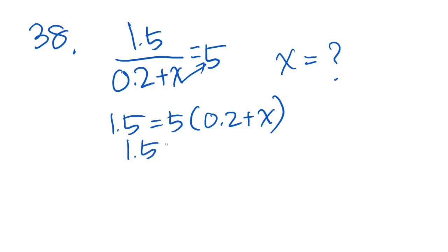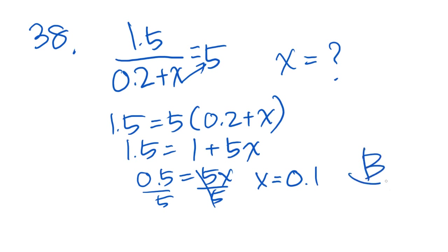1.5 equals 5 times 0.2 plus x. 1.5 equals, let's see, 5 times 0.2, that's just 1, plus 5x. Subtract the 1 from both sides to get 0.5 equals 5x. And then divide both sides by 5, those cancel out. x equals 0.1. And that is answer choice B.